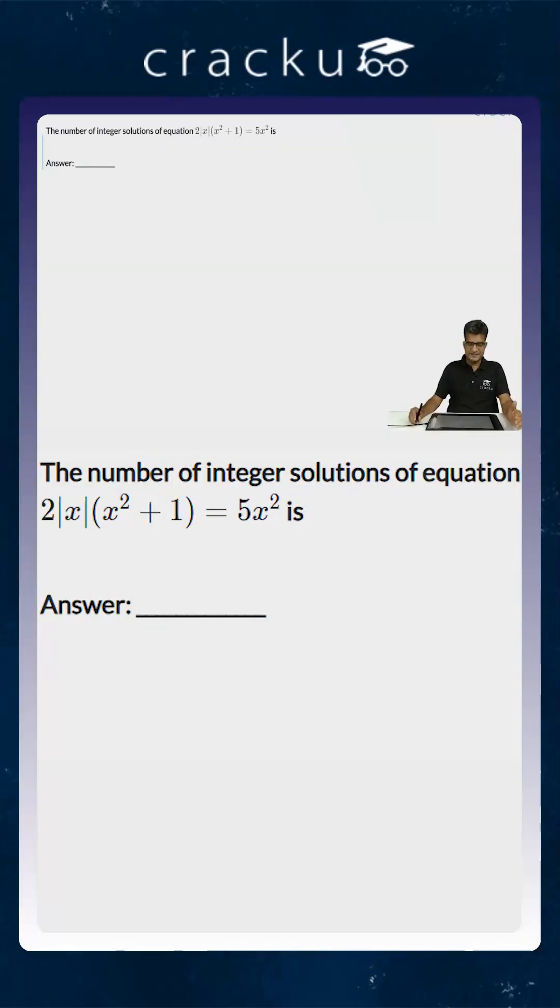In this question we are asked to calculate the number of integer solutions for 2 times modulus of x into x square plus 1 is equal to 5x square. x square plus 1 is there on the left hand side, 5x square is there on the right hand side.